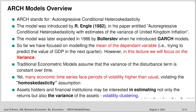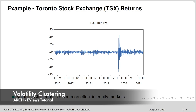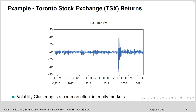We'll talk about volatility clustering. For today's example I have Toronto Stock Exchange returns. The graph starts in 2016 and goes to 2021 — daily data — and you can see that the volatility has been pretty stable over time. However, there has been a big issue in early 2020 with COVID, and we can see that volatility has increased significantly and remained quite volatile over that period. Volatility clustering refers to a common effect in equity markets where periods of small volatility are followed by small volatility periods.